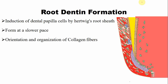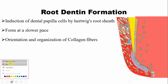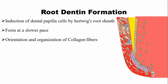When the tooth erupts into the oral cavity, two-thirds of the root is formed. Root dentine is formed with the help of Hertwig epithelial root sheath, which basically comprises the inner and outer enamel epithelium. This Hertwig epithelial root sheath gives signals to the dental papilla cells, which differentiate into odontoblasts that secrete the organic matrix, later mineralized. Root dentine formation occurs at a slower pace compared to coronal dentine formation.